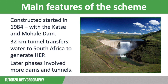A 32-kilometre tunnel transfers water to South Africa's Muelh plant to generate hydroelectric power. The second phase of the project involved the construction of the Polihali Dam, which can hold 2.2 billion cubic metres of water and has a 38-kilometre transfer tunnel.